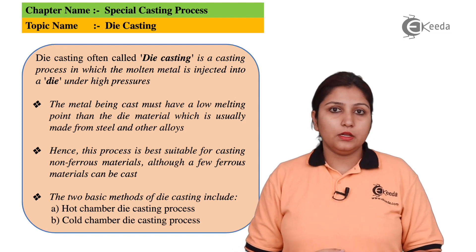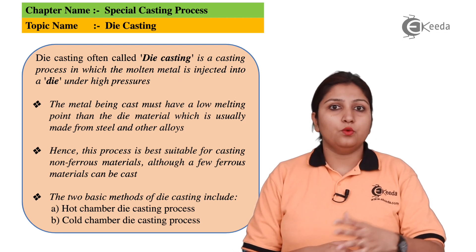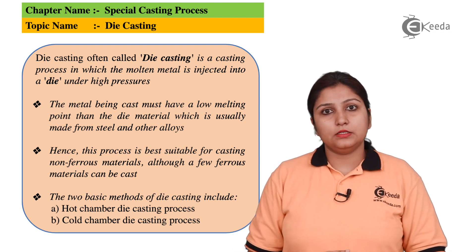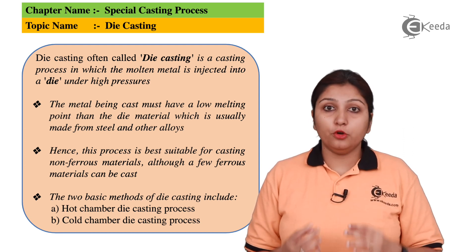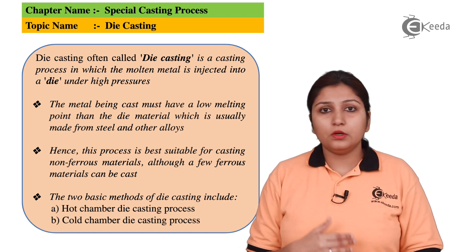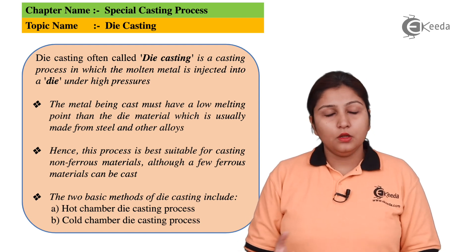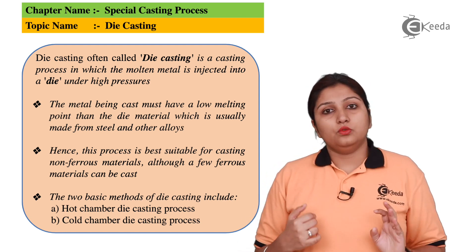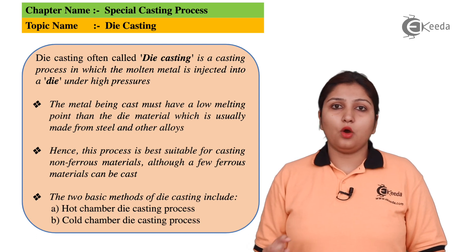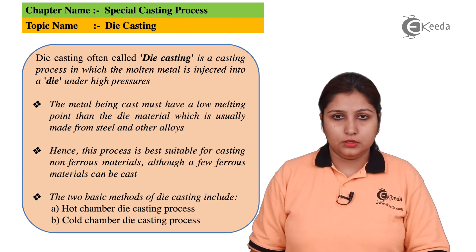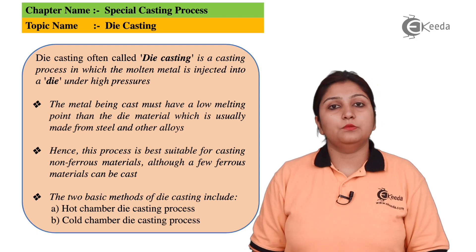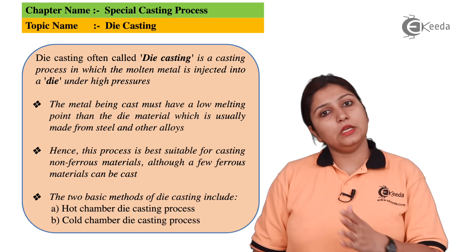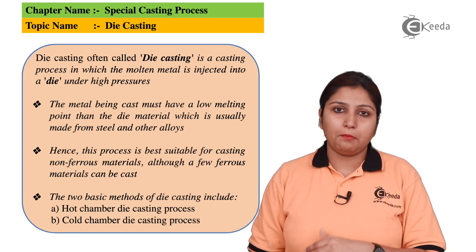What happens in die casting? It is classified into hot die casting and cold die casting. Basically, pressurized material is pushed inside through different means to the metal to be casted. The material can be steel or other alloys. It has to be casted, pushed in, and your material is made. We will see hot and cold die casting one by one.